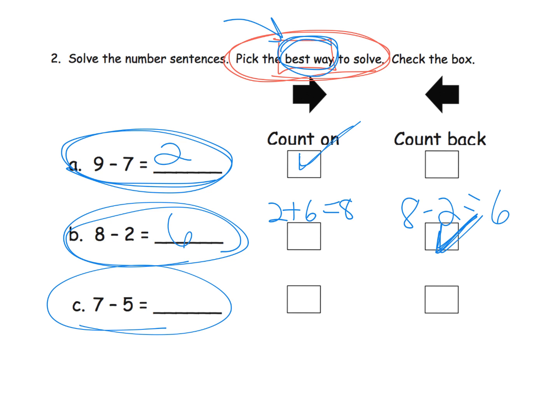And then the last one, 7 minus 5. If we were to count back, we'd have to hop backwards 5 steps, and that's a lot of hopping. Whereas counting on, 5, 6, 7 gives me the answer of 2. So I would probably say the count-on method is a little easier. But really, teachers and parents, we want to get this word best out of the way. Just whatever method works for the students is fine by us.